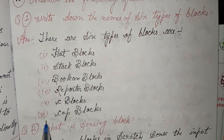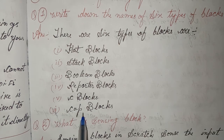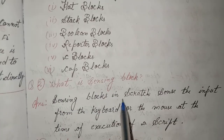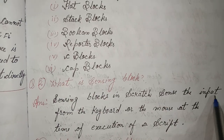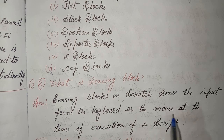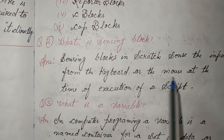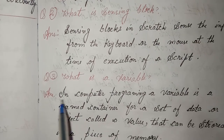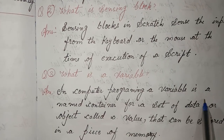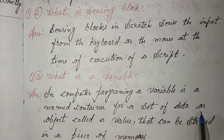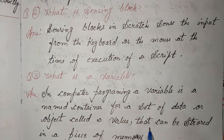Second, what are sensing blocks? Answer: Sensing blocks in Scratch sense the input from the keyboard or the mouse at the time of execution of a script. Third, what is a variable? Answer: In computer programs, a variable is a named container for a set of data or object called a value that can be stored in a piece of memory.